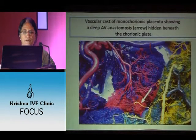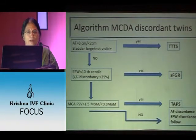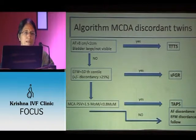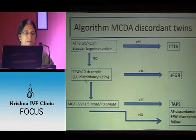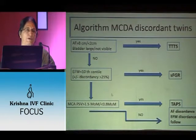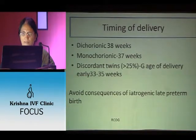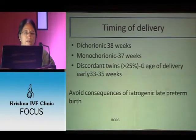For MCDA twins: if one sac has AFI more than 8 and another less than 2, diagnose TTTS. If there is no liquor discordance and one twin is below the 10th centile, diagnose SFGR. If MCA PSV is more than 1.5 in one and less than 0.8 in the other, diagnose TAPS — twin anemia polycythemia sequence. If none of these criteria are met, it is simply amniotic fluid discordance and estimated fetal weight discordance. Timing of delivery: dichorionic at 38 weeks, monochorionic at 37 weeks, unless there are Doppler abnormalities.